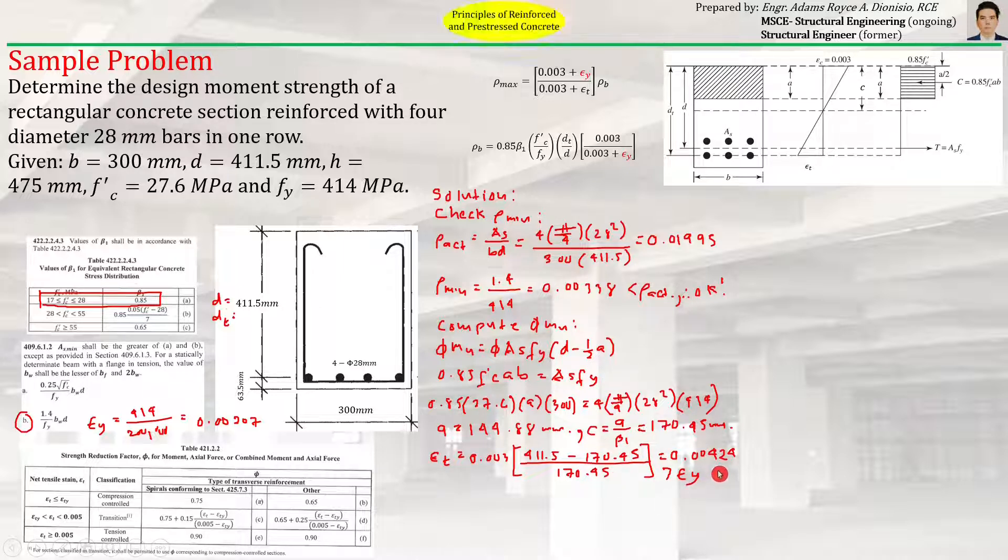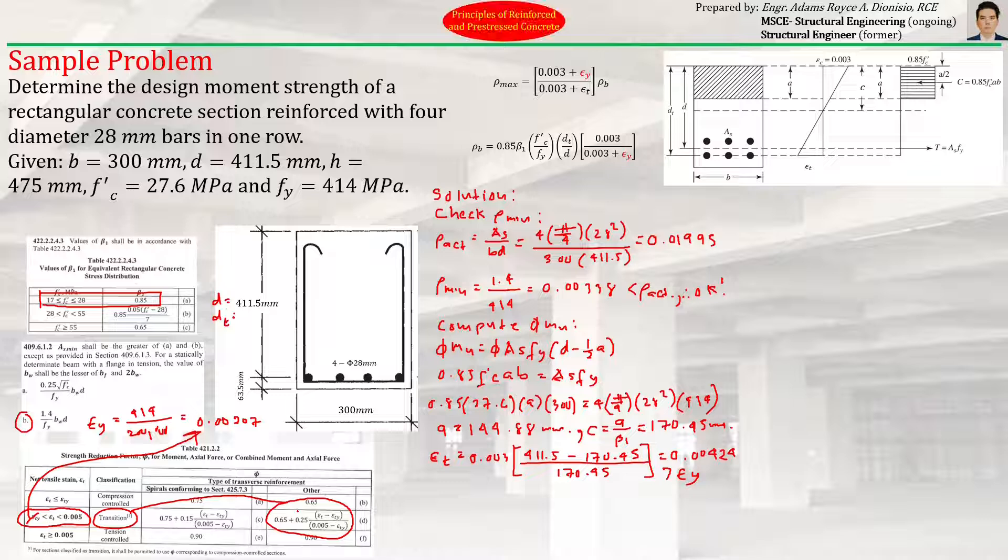At the same time, we determined that the section is not tension controlled but in the transition zone, because the strain is 0.00424. Looking at the table, the strain y is 0.00207. The tensile strain is between 0.00207 and 0.005, which is 0.00424. Therefore, according to code, it's in transition. And if it's in transition, we have to use this formula to get φ, the strength reduction factor.